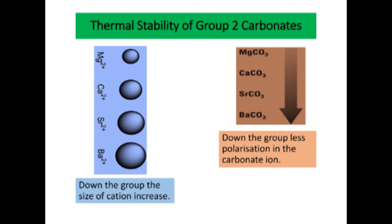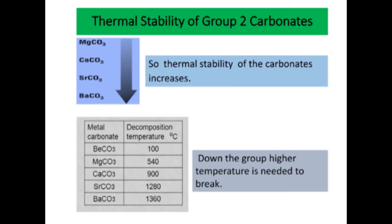In magnesium carbonate the carbonate ion is distorted, but in calcium carbonate the carbonate ion is not distorted, so no polarization. Thermal stability of Group 2 carbonates: the reason behind this is ion polarization. From Mg²⁺ to Ba²⁺, the size of the cation increases due to more shells, so down the group there is less polarization in the carbonate ion.